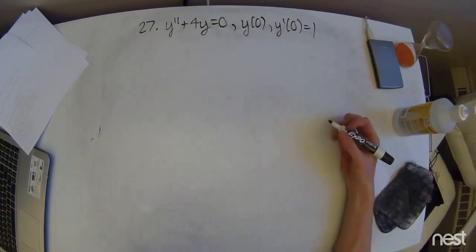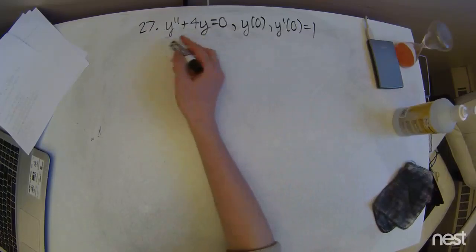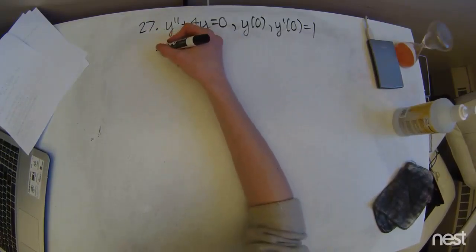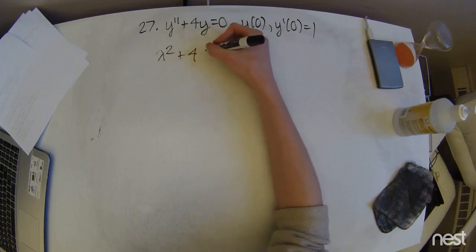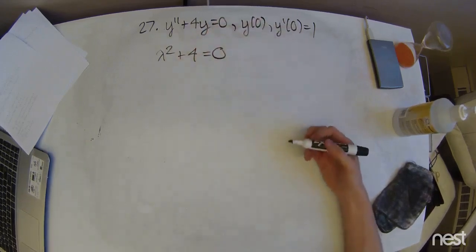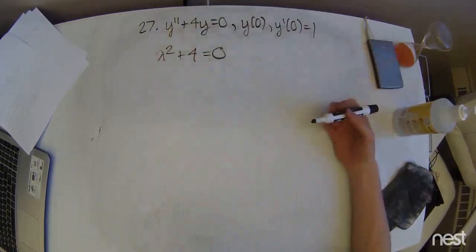So we're going to set up the characteristic equation using the coefficients. Multiplying this out, that's just going to look like lambda squared plus 4 equals 0, because there's no first order derivative term there.